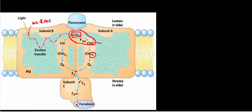A sub-zero will then transfer its electron to phyloquinone, which can accept a maximum of two electrons. In order to fully reduce phyloquinone, it's going to take two reductions by the special electron acceptor chlorophyll A sub-zero.